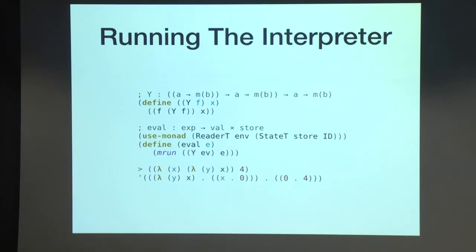You can run this evaluator. Here's a lambda x, lambda y, x, so the const function in Haskell, applied to 4. And the result is a closure where, in the environment, x maps to the address 0, and in the resulting store, the address 0 maps to the value 4. So that's all there is to this non-standard concrete interpreter. I think you should all be able to write one of these if you wanted. And the reason we made these non-standard choices are for a few reasons.